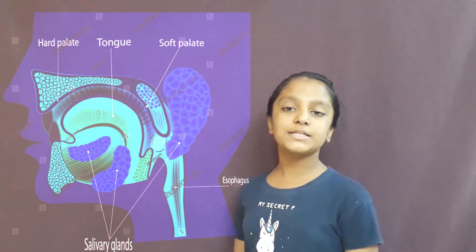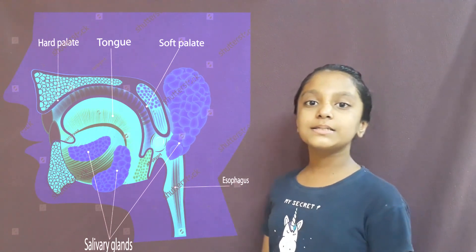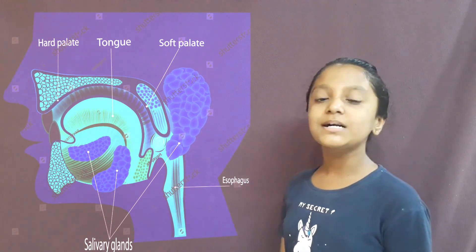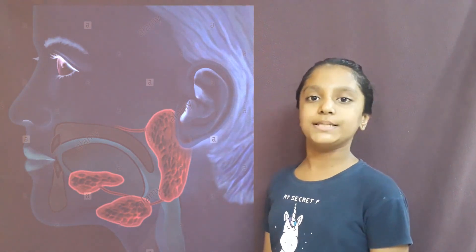This food gets soft and moist due to the saliva present. Saliva, the digestive juice, is present in the structure called salivary glands. These salivary glands break down the food that contains starch such as rice into sugar. Hence it tastes very sweet. This soft and moist food is called bolus.